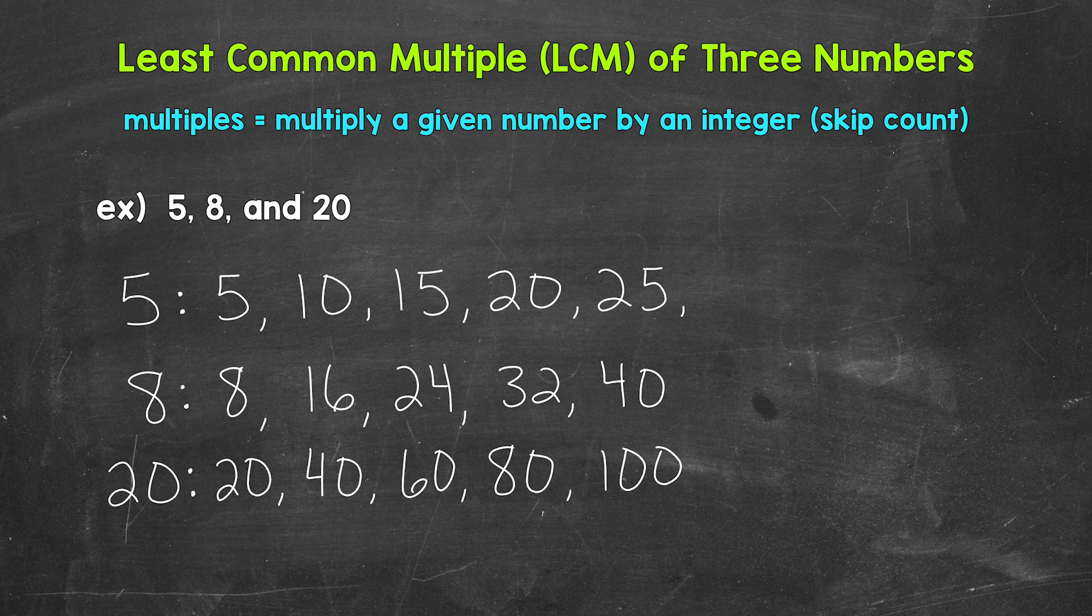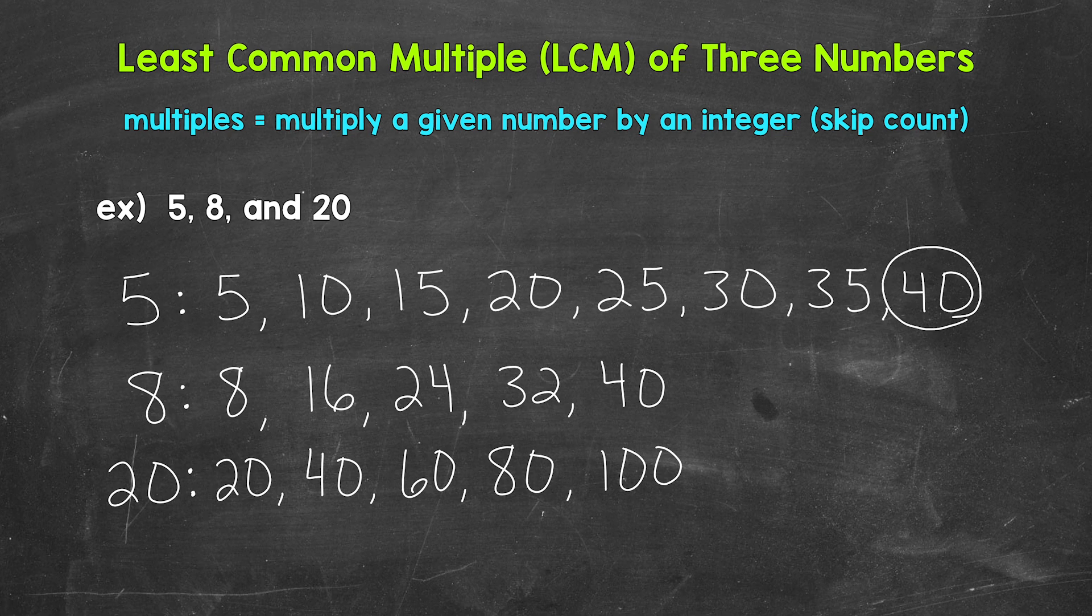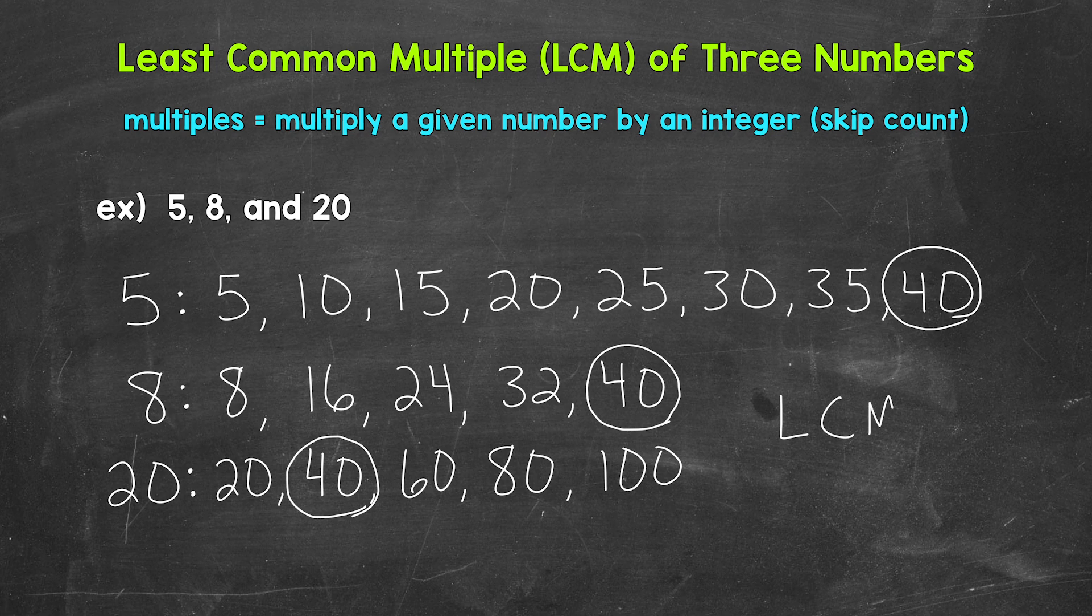So after 25, we have 30, then 35, and then 40. Now 40 is going to be a common multiple, a multiple that all of our numbers share. And specifically, it's going to be the least common multiple. So again, 40 is going to be our least common multiple. So the LCM, which stands for least common multiple, is 40.